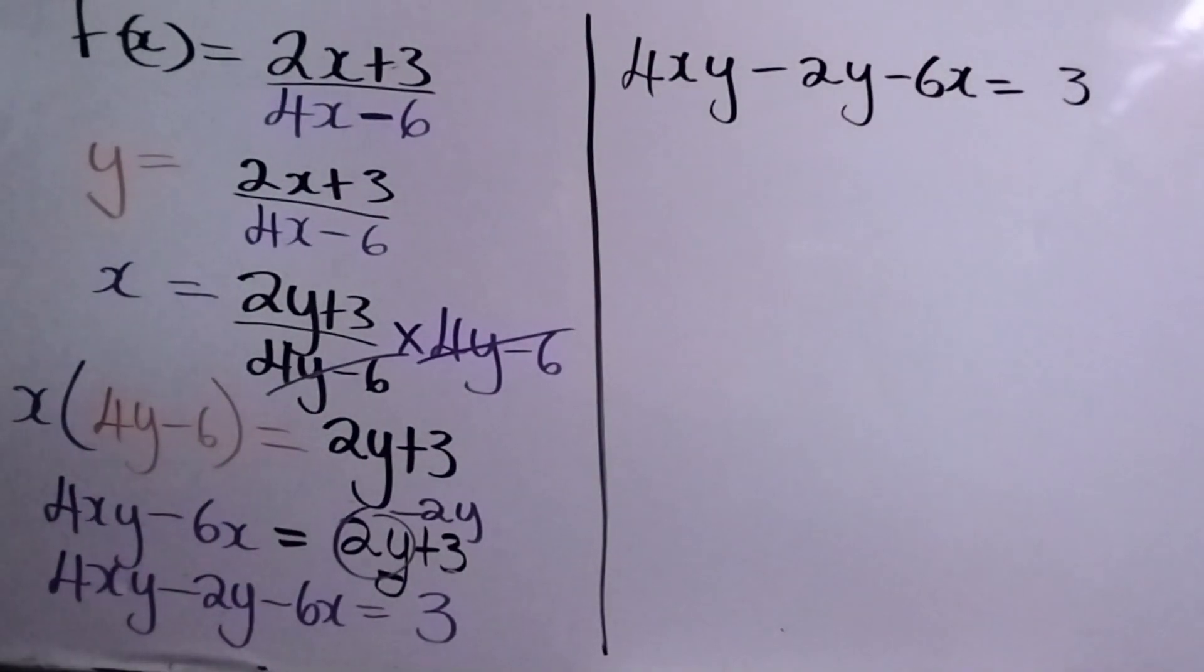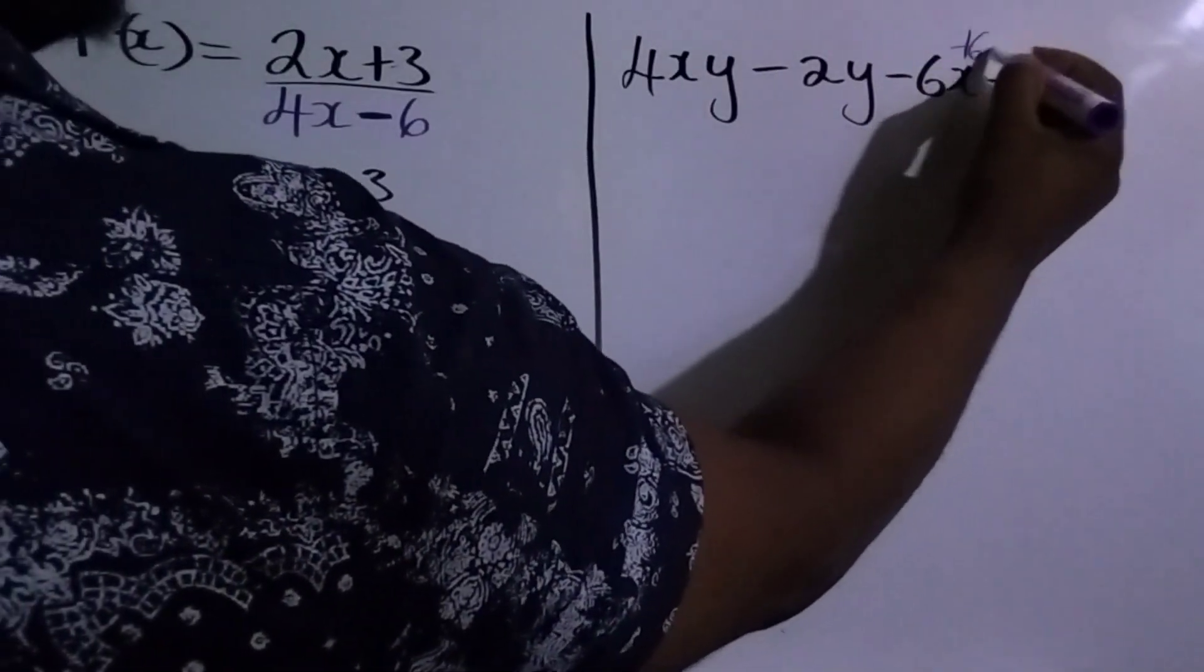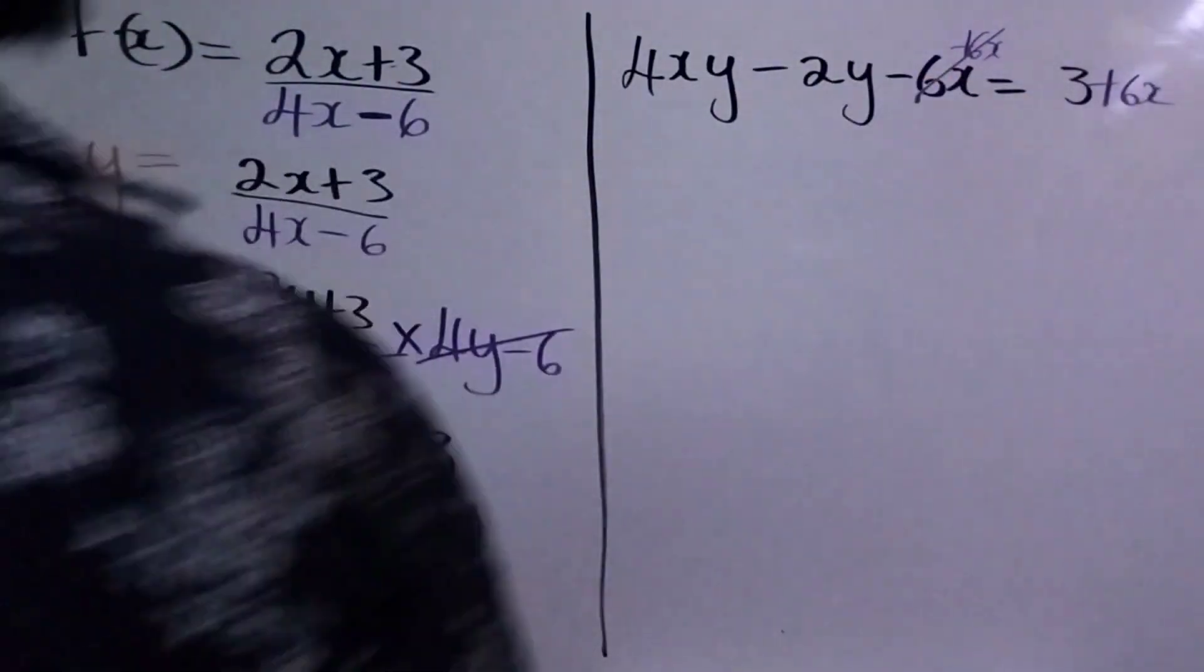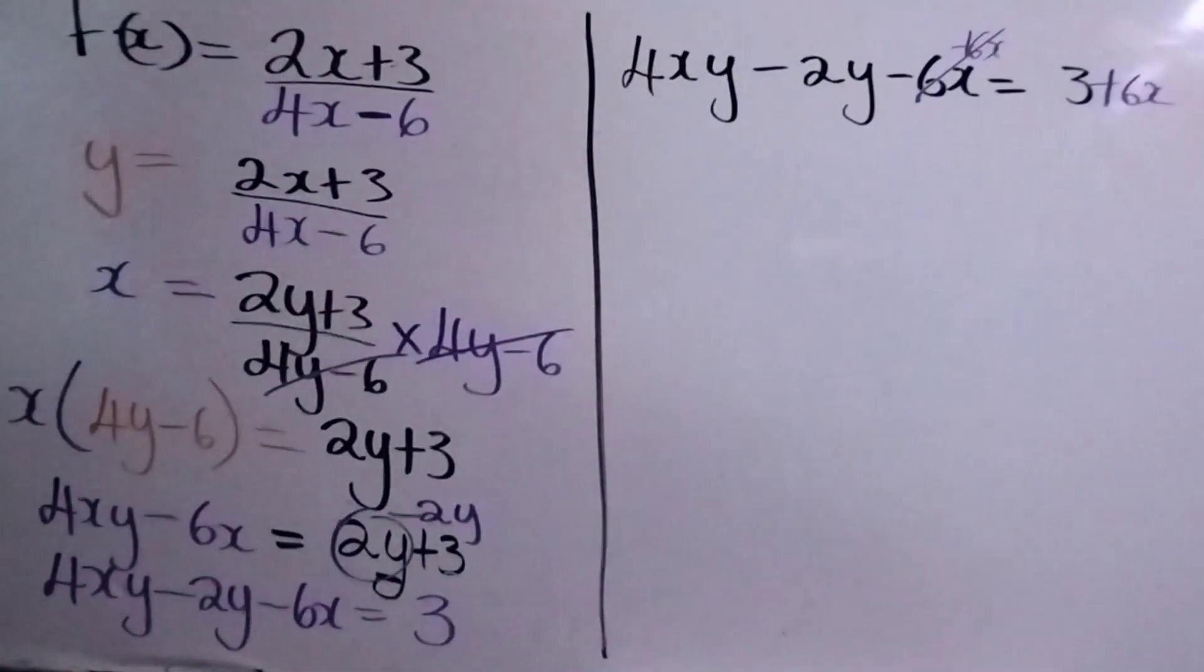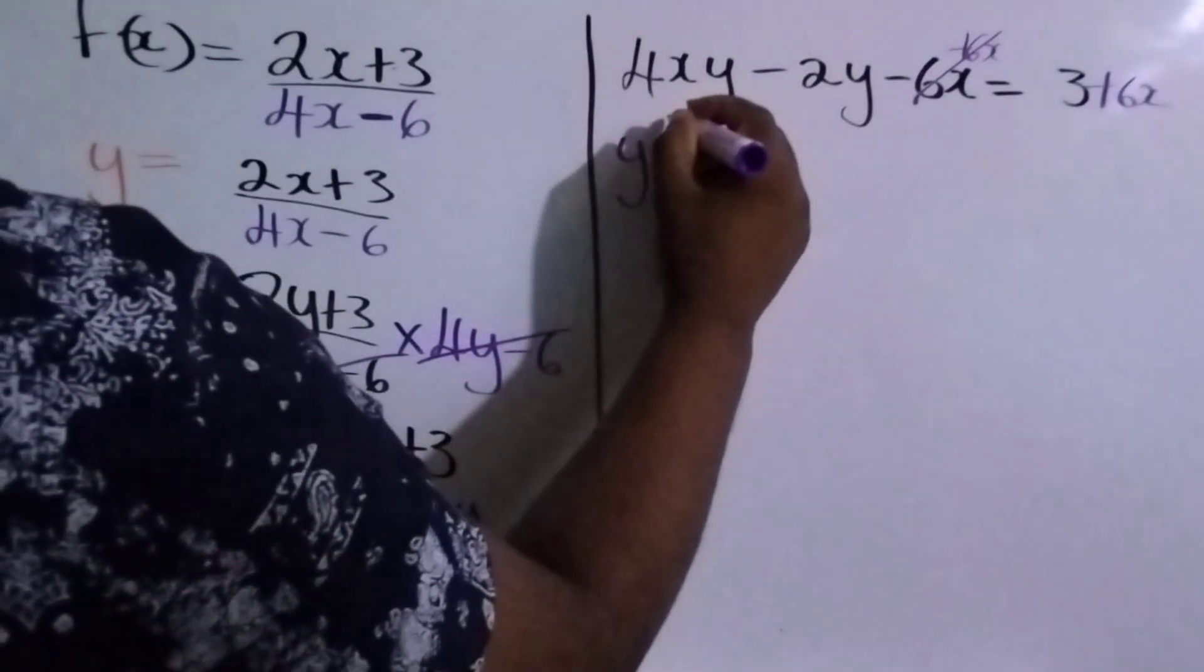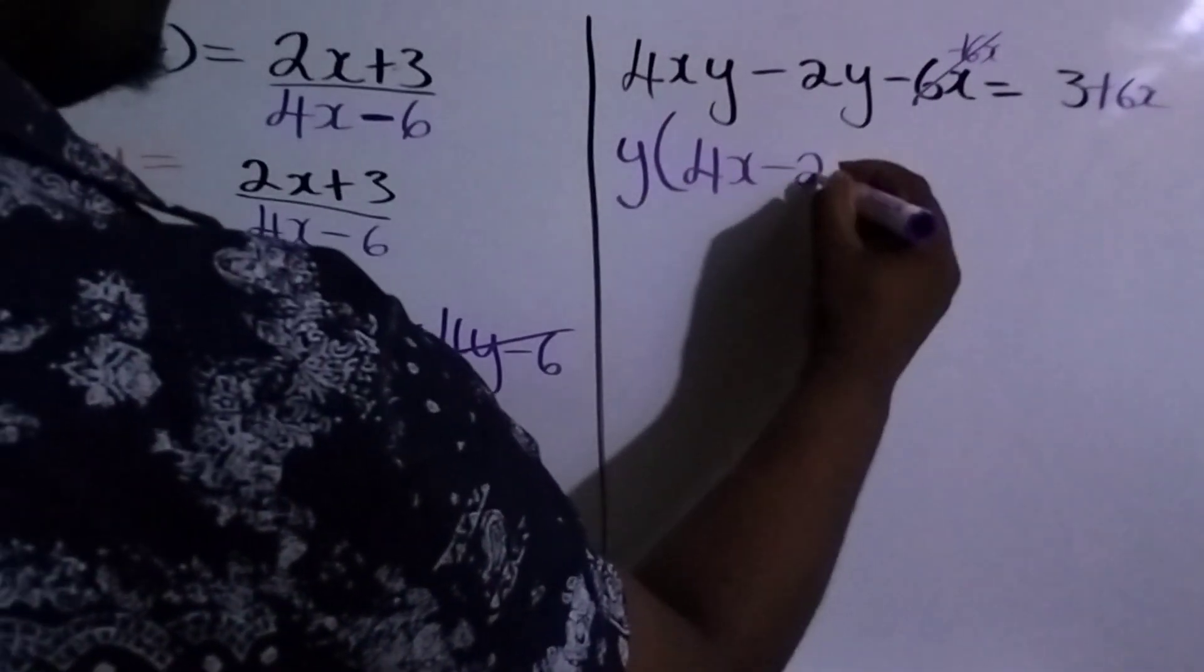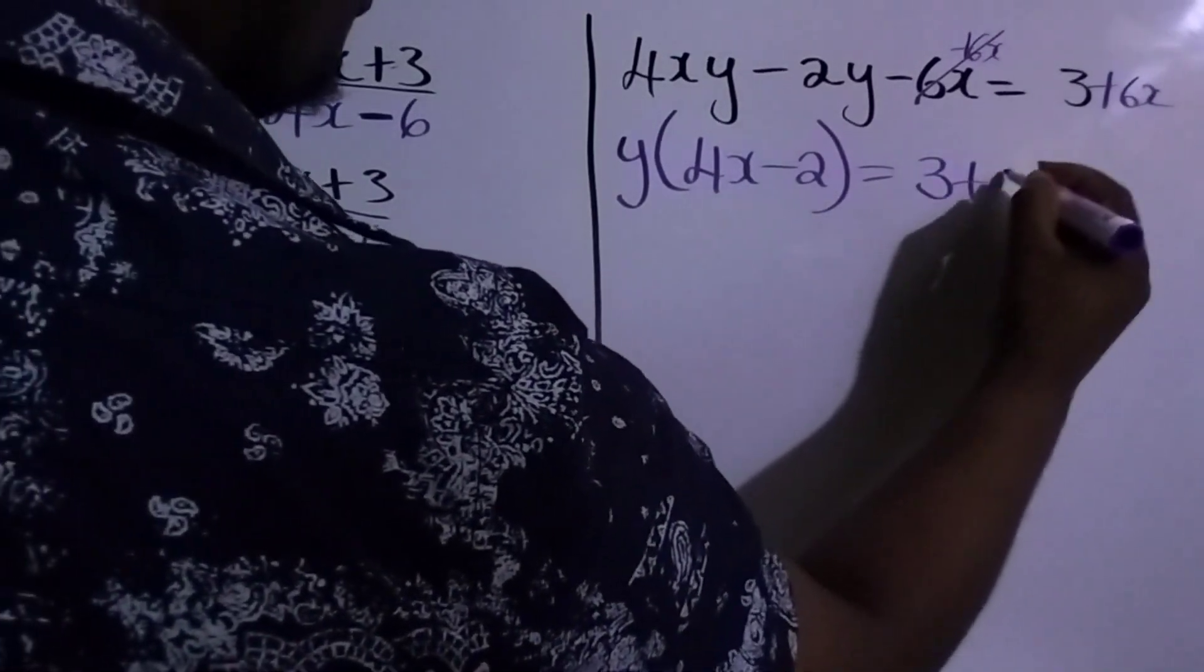So it's 4xy, we're almost finished, minus 2y minus 6x, and all of that is equal to 3. So we want to make y the subject, so we need to get rid of this minus 6x by taking the inverse, which is positive 6x. So we're going to add 6x to both sides. So we have two y terms here now. So what we do is factor out the y. Y is common, we want to get it by the same. We factor out the y. So y, that would leave us with 4x minus 2, and that would leave us with 3 plus 6x.